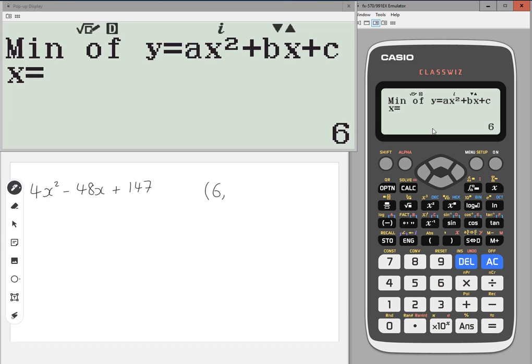So this has a minimum x value of six and the y value is three. So just pressing equals again, which means that in completed square form, it must be of the form (x - 6)² + 3.